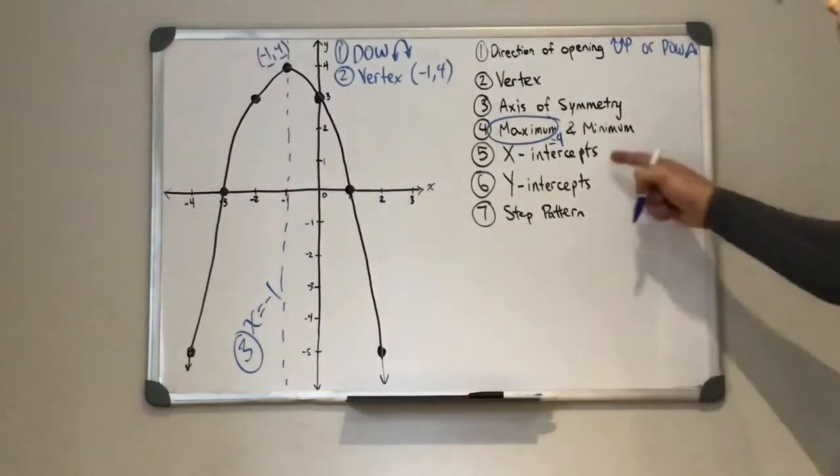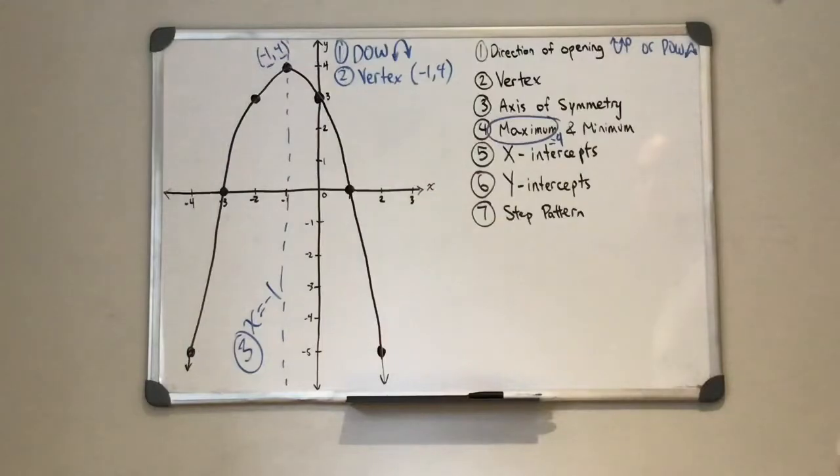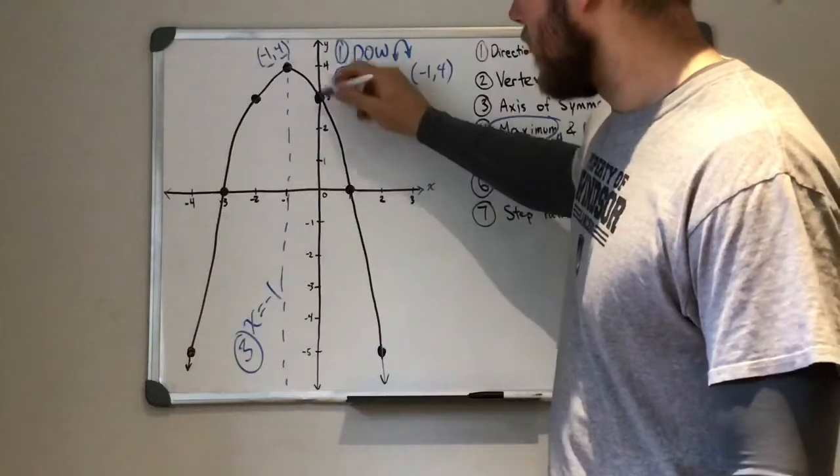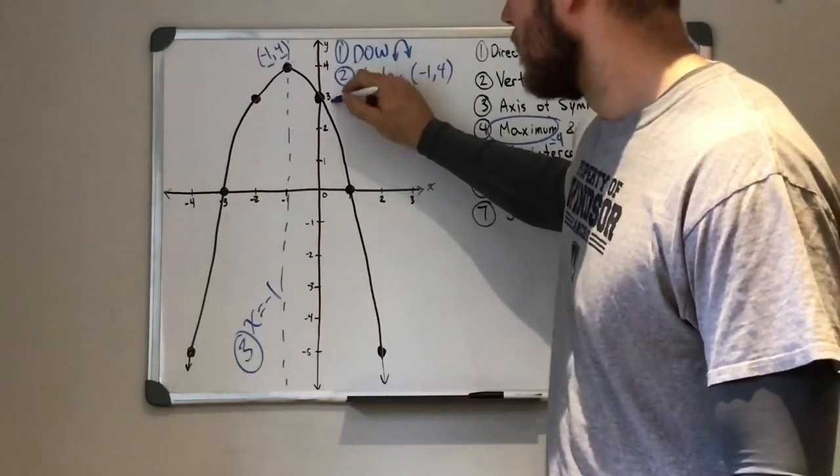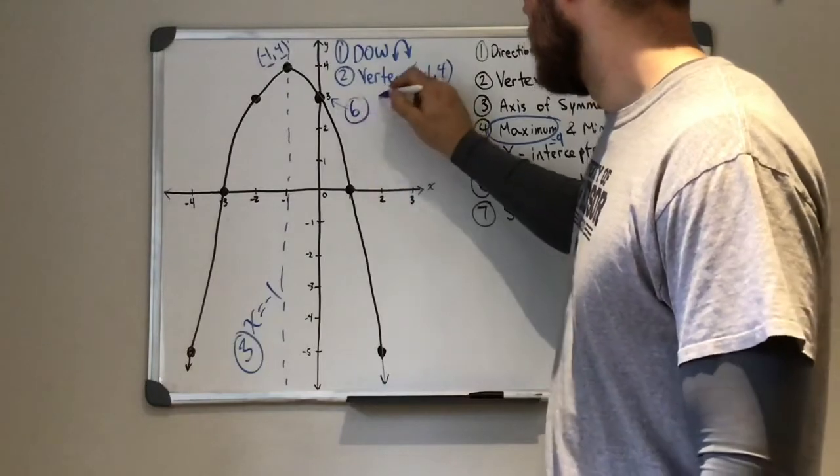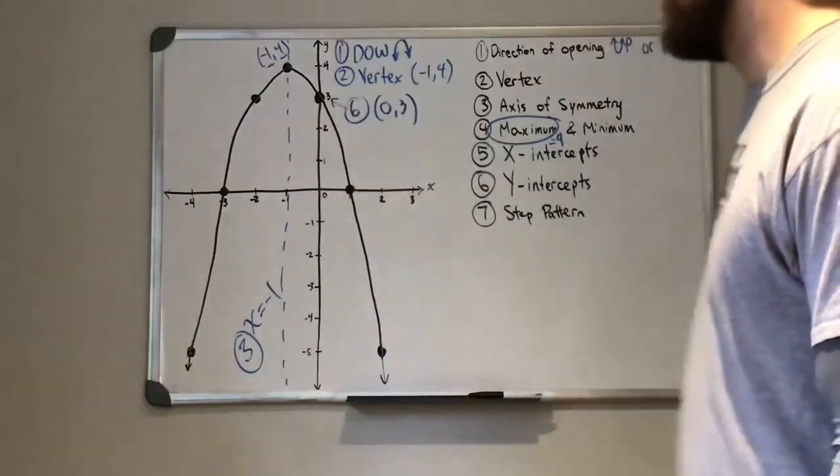X-intercepts and y-intercepts. I'll start with number six here. So our y-intercept we know from all our linear relations is where it hits the y-axis. So this is going to be number six. Our y-intercept would be (0, 3). So when x is 0, y is 3.